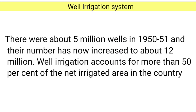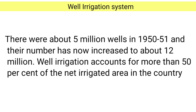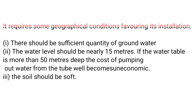About 50 percent of the net irrigated area in the country is irrigated by wells, and well irrigation has considerably increased across the country. There are a few geographical factors for the installation of wells: there must be a sufficient amount of groundwater, the depth should be within 15 meters otherwise pumping costs will be high, and the soil should be soft enough for digging.